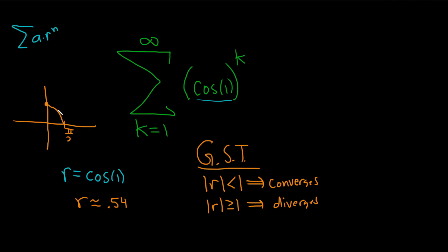The value of cosine of 1 is going to be less than 1, because pi over 2 is about 1.57, roughly. So cosine of 1 is somewhere over here. So it's going to be less than 1. No issues there.